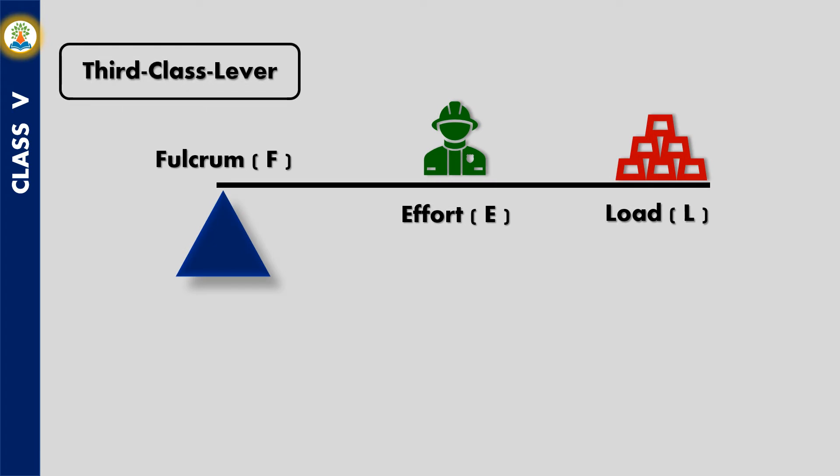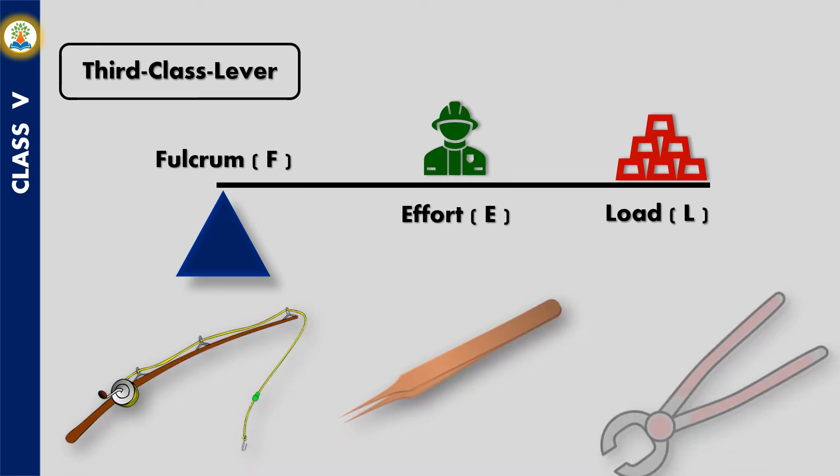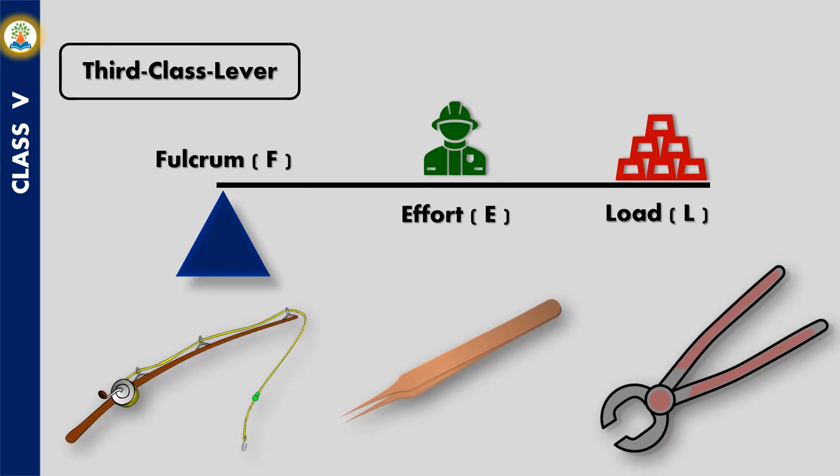In a third class lever, the fulcrum is at one end of the lever and the load is at the other end. The effort is applied between the fulcrum and the load. Fishing rods, tweezers, and tongs are examples of third class levers.